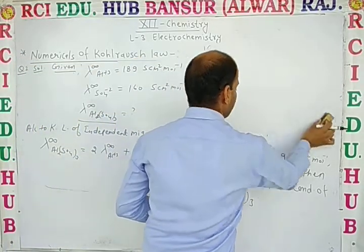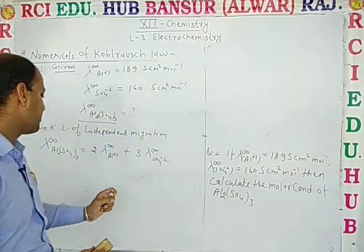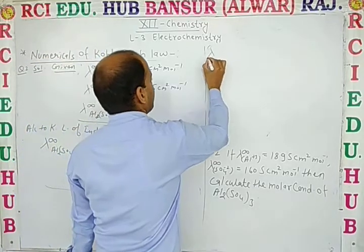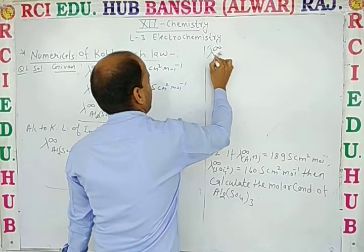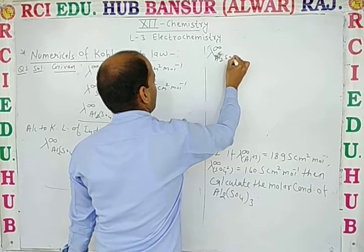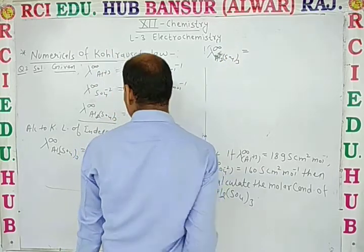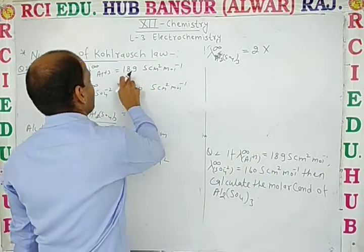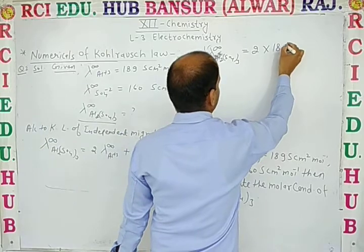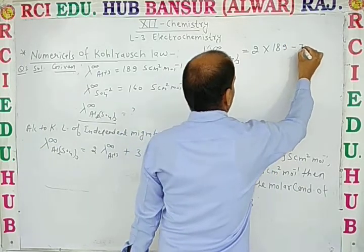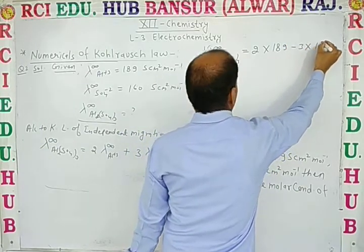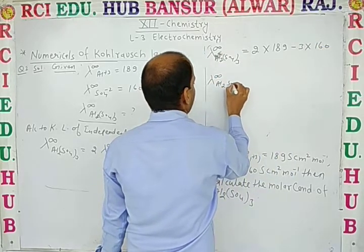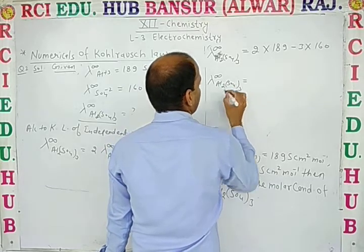Now put in the values: λ∞(Al₂(SO₄)₃) = 2 × 189 + 3 × 160 = 378 + 480.